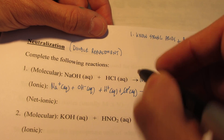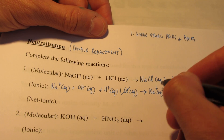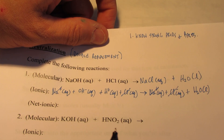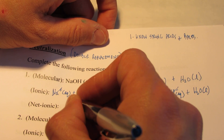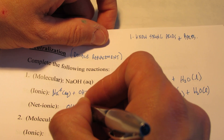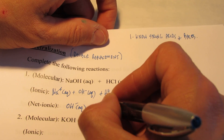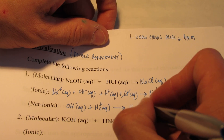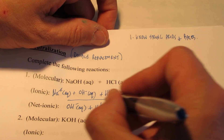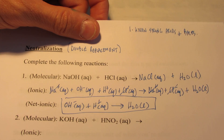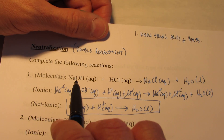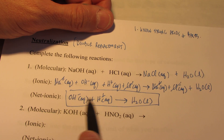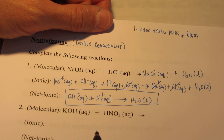We've got chlorides that are the same on both sides, and the sodiums are the same. Whatever's left we write down as our net ionic. We have OH− and H+ left on the reactant side, and just water on the product side. That's the net ionic equation for example one. Notice that was between a strong base and a strong acid — it simply reduces down to OH− + H+ → H2O. Pretty simple.